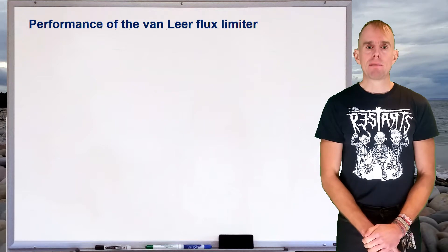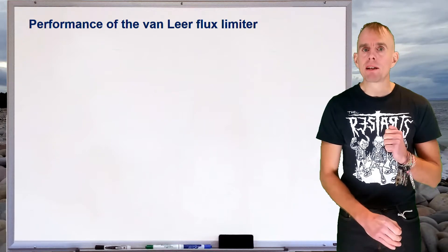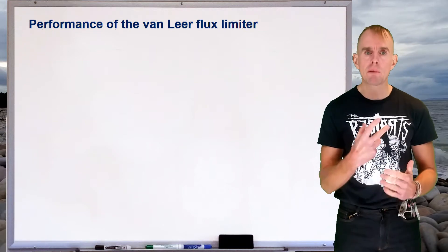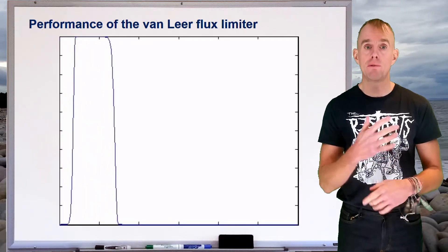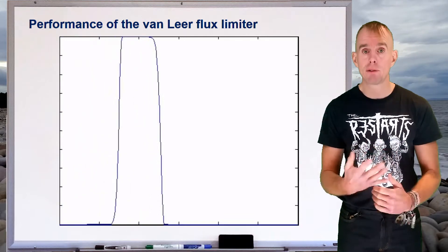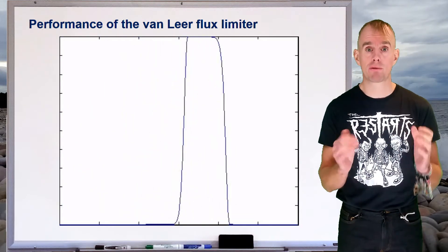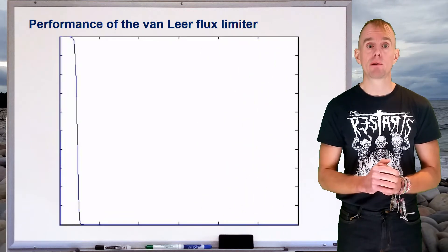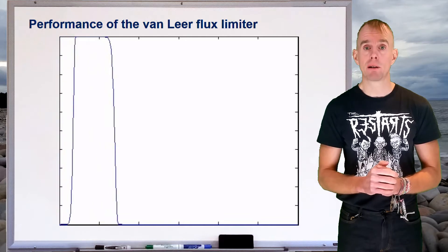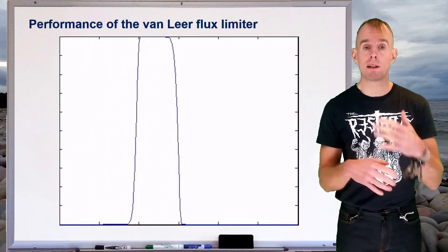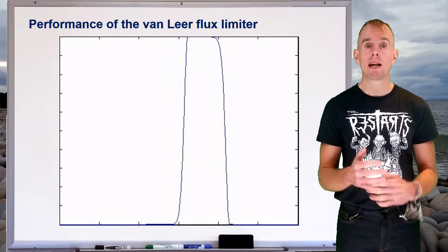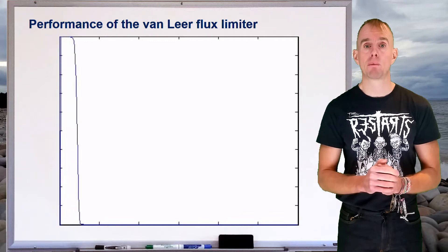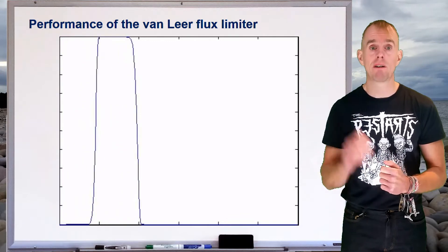How does the van Leer flux limiter alter the solution to our wave equation problem? This was our square pulse of tracer being injected within a flow with diffusion turned off — an infinite Péclet number — on a relatively coarse finite difference grid. If you look at the animation playing on the whiteboard, you'll see it's doing remarkably well. We could improve performance even more by increasing the grid resolution, but I've used a coarse grid purposefully to try to identify any problems with the method. And it is working very accurately.